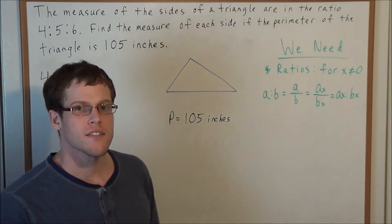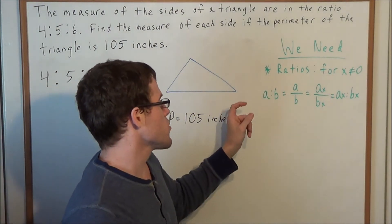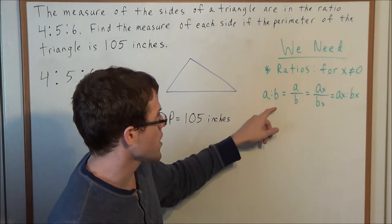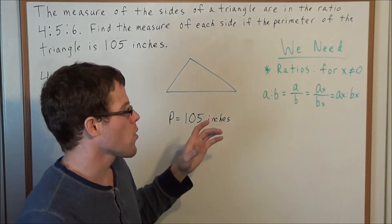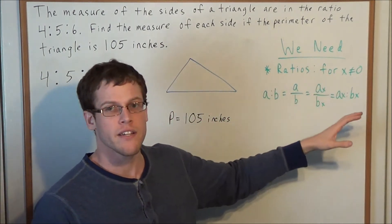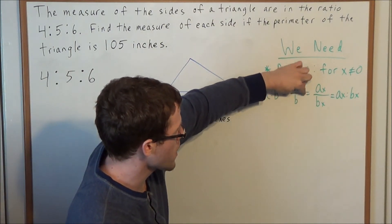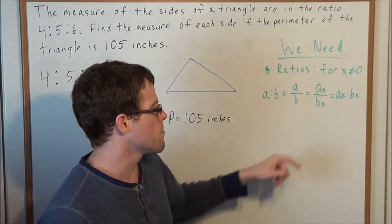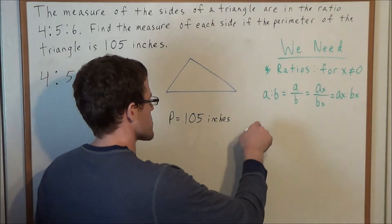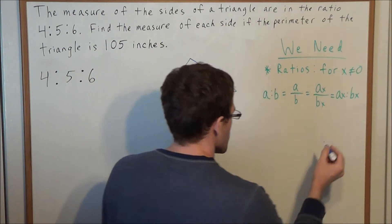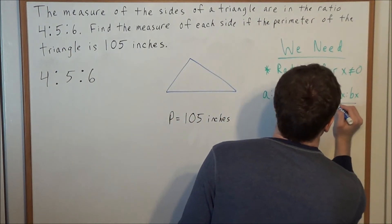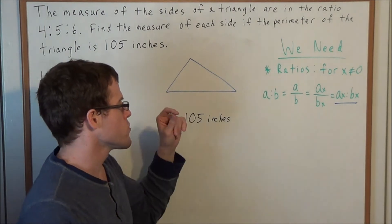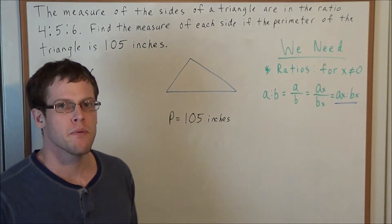We need the concept of a ratio. A ratio like A to B can be expressed as a fraction A over B. For some x value not equal to zero, if we multiply the numerator and denominator by x, we get Ax over Bx, which allows us to express the ratio A to B as Ax to Bx. This represents all the ratios that would reduce back to A to B.